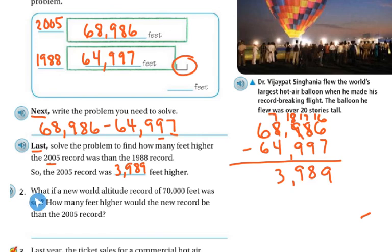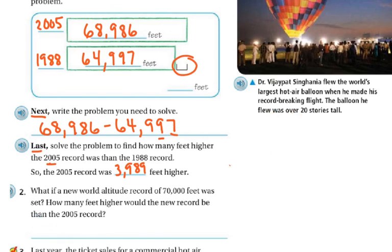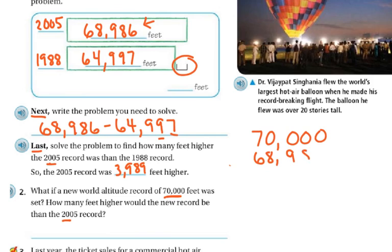Question two asks: what if a new world altitude record of 70,000 feet was set? How many feet higher would the new record be than the record of 2005? The new record is 70,000 feet. My 2005 record was 68,986. So I'm going to subtract: 70,000 minus 68,986.